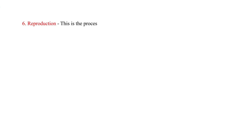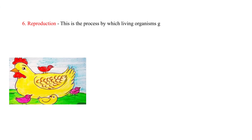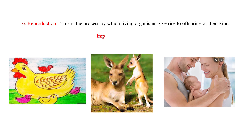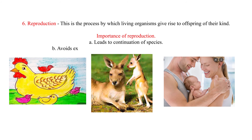Six: reproduction. This is the process by which living organisms give rise to offspring of their kind. Importance of reproduction: it leads to the continuation of species and avoids extinction — the dying out of certain types of plants and animals.